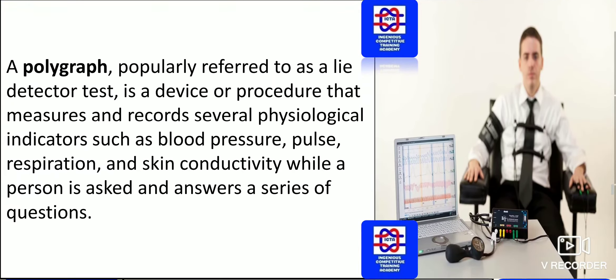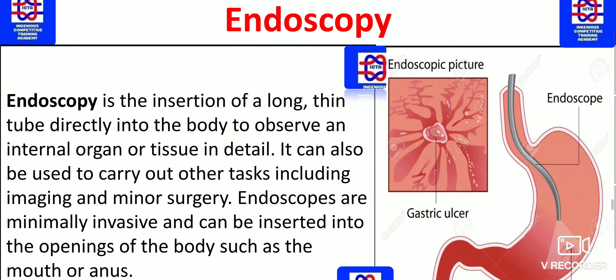And polygraph — this type of test is popularly referred to as a lie detector test. Whenever we want to get information or detect if someone is telling lies, this polygraph test is done. It is a device or procedure that measures and records several physiological indicators such as blood pressure, pulse, respiration, and skin conductivity, while a person is asked and answers a series of questions. This will be done to identify a thief or murderer.